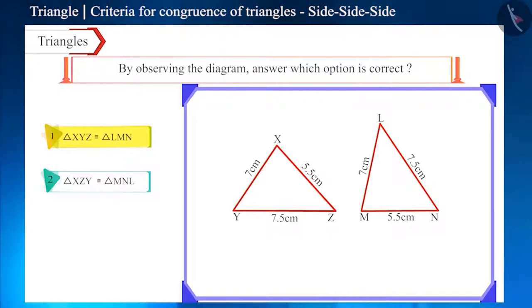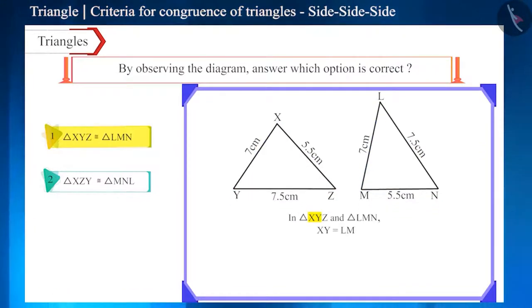In these two triangles, all three sides are equal but the corresponding sides are not equal. Side XY is equal to side LM, but side YZ is not equal to side MN, and side XZ is not equal to side LN. Corresponding sides are not equal.